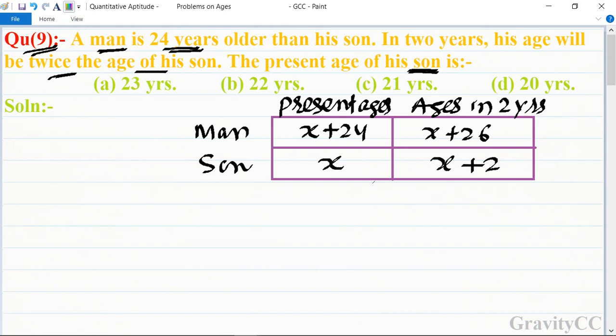According to the question, after two years, the father's age is equal to twice the age of the son. So we have x + 26 = 2x + 4, which gives us x - 2x = 4 - 26.